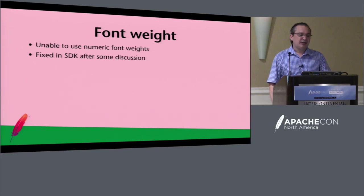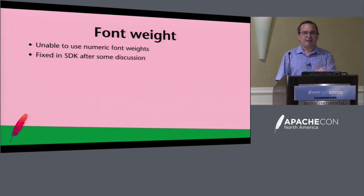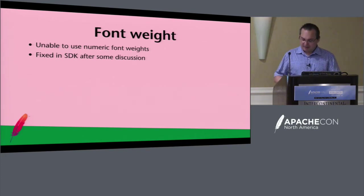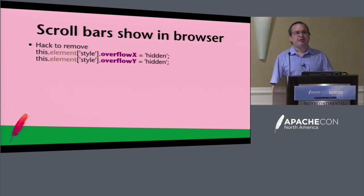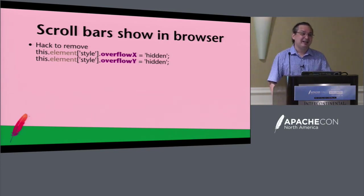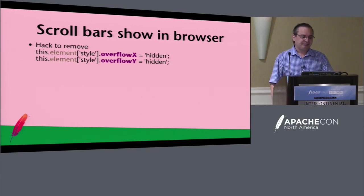Font weight has been fixed in the SDK after some discussion. The ActionScript side doesn't support numeric font weights, but the JavaScript side does, so that's a nice addition. Finally: sometimes no matter what you do, you'll still get scrollbars showing up in your browser. The solution is just to remove them via CSS — it's not the nicest way, but that's what you have to do to get your code out and into production.